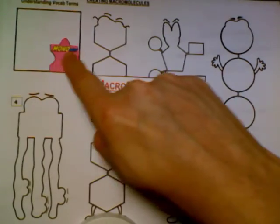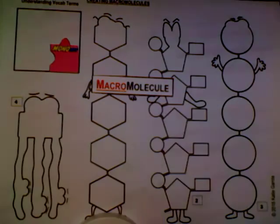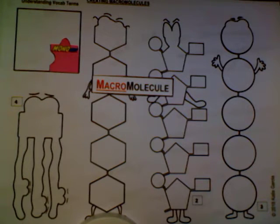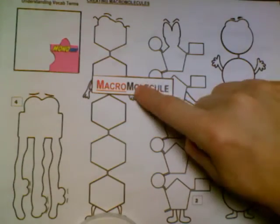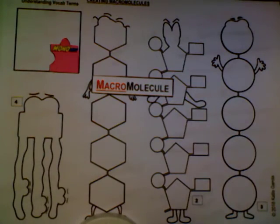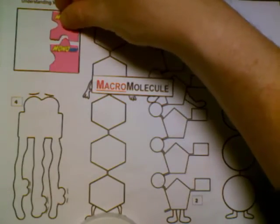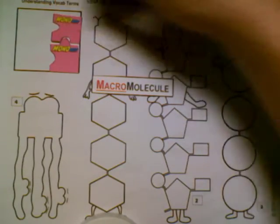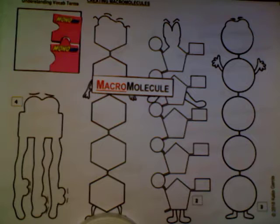Now these monomers are single parts. The prefix mono means one and mer means part, like in mermaid. So the monomers are going to build up even larger macromolecules. The monomers have to be able to go together and form bonds between each other to create these bigger molecules.